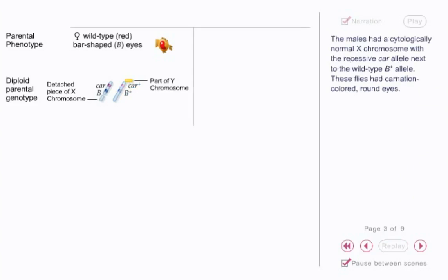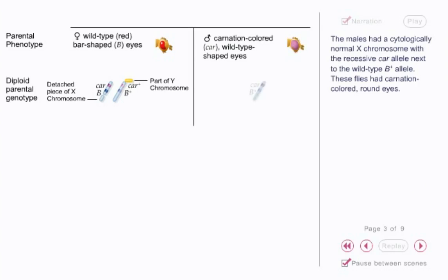This made it a little longer than a normal X chromosome. The males had a cytologically normal X chromosome with the recessive CAR allele next to the wild-type Bar+ allele. These flies had carnation-colored, round eyes.